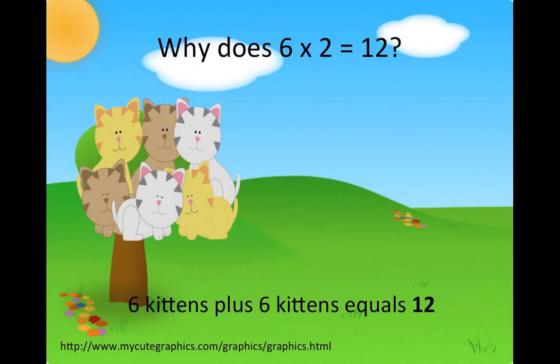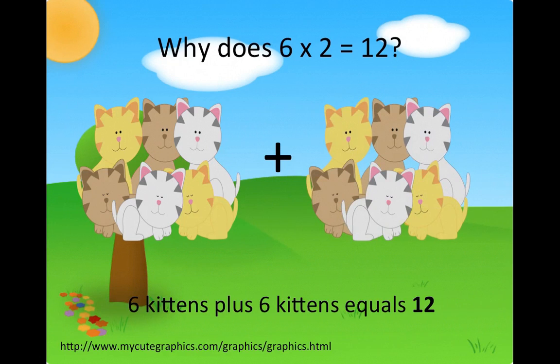If you have 6 kittens in one group and you have 6 kittens in another group, you have 12 kittens total. This is 6 times 2 equals 12.